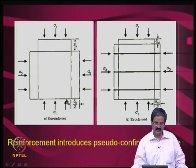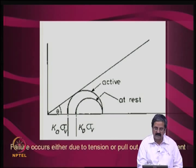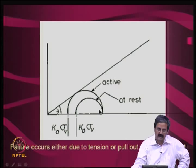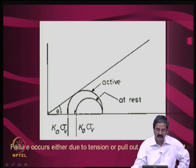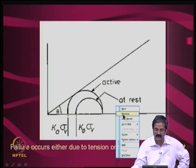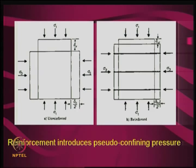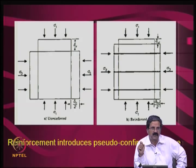This is a very simple principle. To understand it further using a Mohr circle: the normal stress is on the x-axis, shear stress on the y-axis, and there is a friction angle. In the previous diagram, there is a vertical force and a confining pressure developed — the pseudo-confining pressure, which is K₀·σ_v. Lateral stress is K₀ times σ_v. As long as K₀ is there — meaning at-rest pressure — the soil does not move.